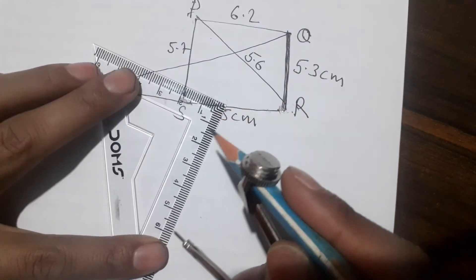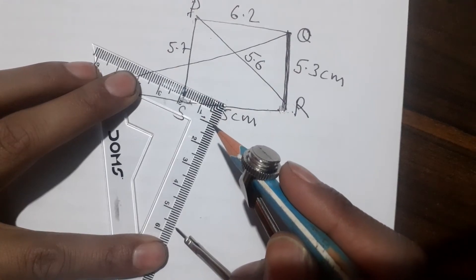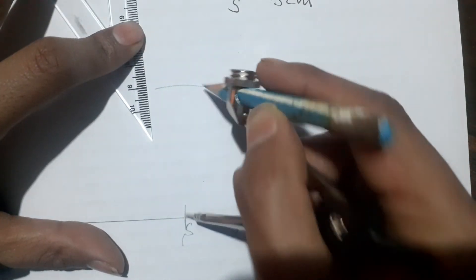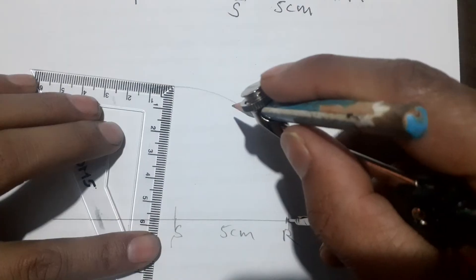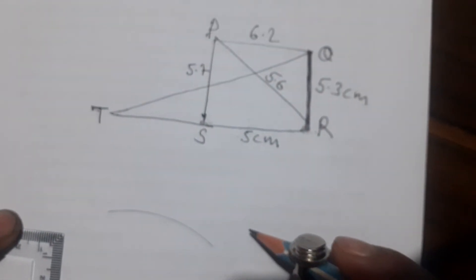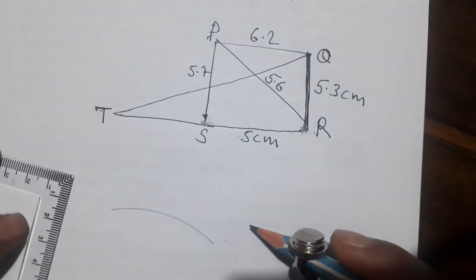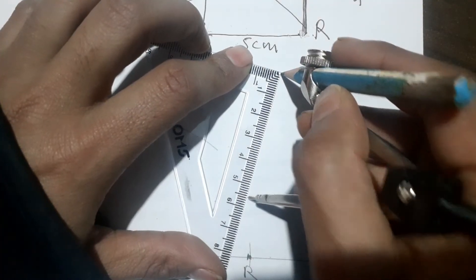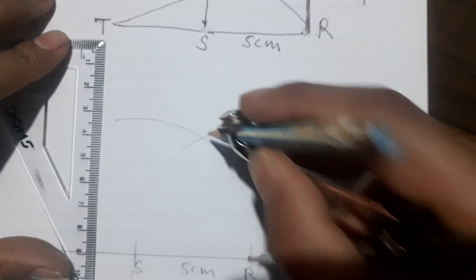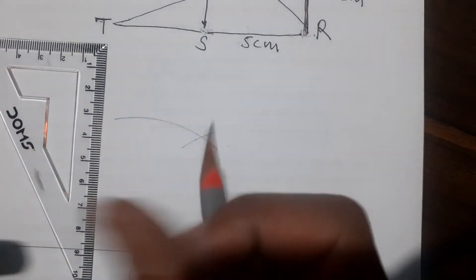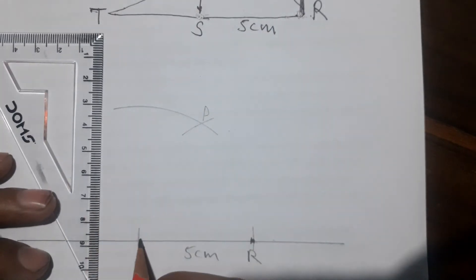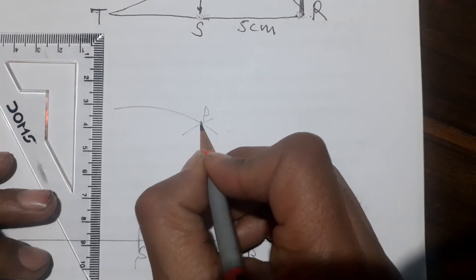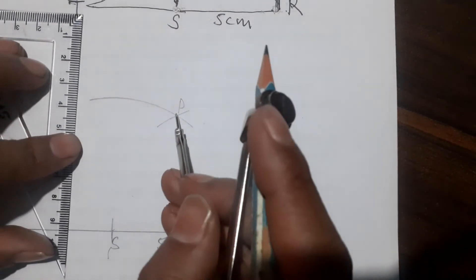Now the compass size is set to 5.7 cm. This is S to P, which is 5.7 cm. Then we set it to 5.6 cm — this is PR equals 5.6 cm. This gives us the point P.